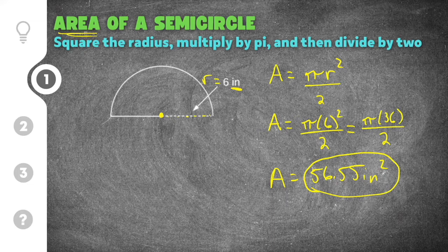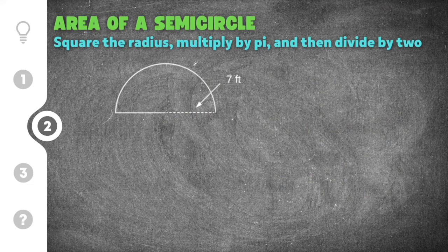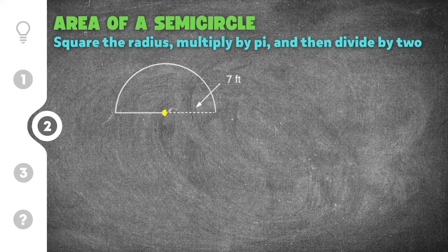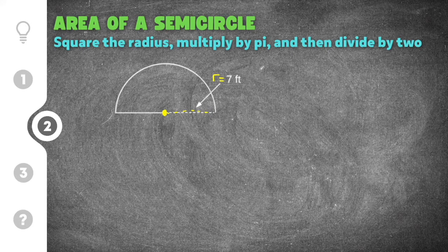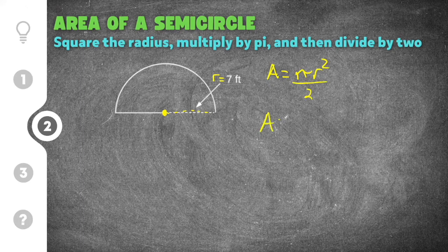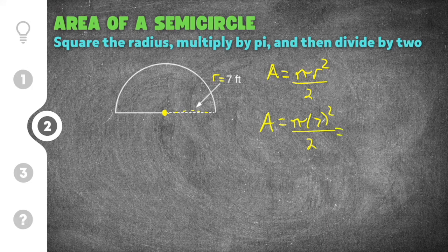The second practice problem gives us a semicircle with a dashed line labeled as seven feet. The dashed line starts at the center, which means seven feet is the radius. We go ahead and use seven for r in our formula: area equals pi times r squared divided by two, with r equal to seven.